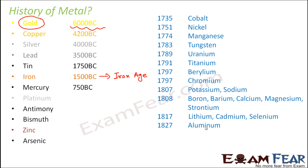The first discovery happened in 6000 BC, and discoveries are still happening — it never stops. For example, aluminium was discovered just in 1827, which is not that long ago. Now it is 2015, and look at the variety of ways aluminium is used — aluminium vessels, utensils, aluminium foils, wires made of aluminium. It took a very long time to discover all these metals, starting somewhere in the BCs and continuing through the 1800s and 1900s. That's how metals were discovered.